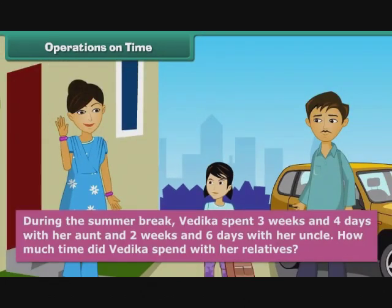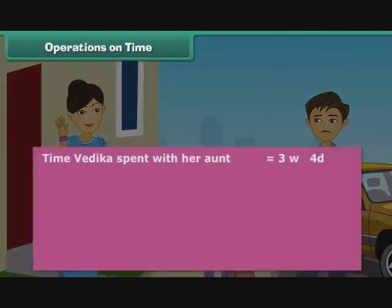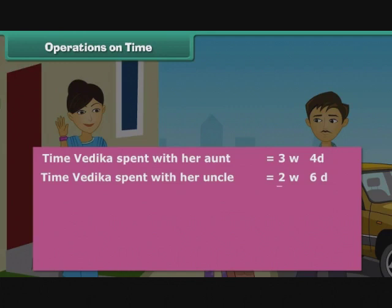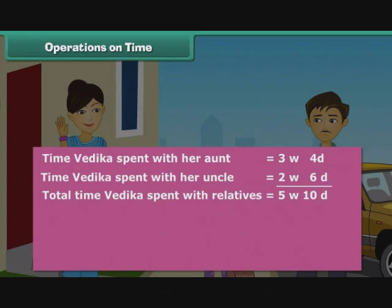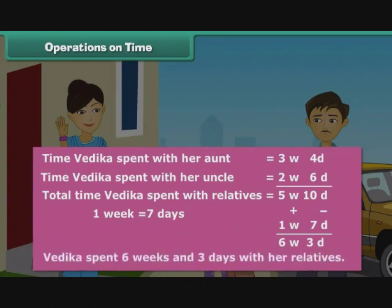During the summer break, Lethika spent 3 weeks 4 days with her aunt and 2 weeks 6 days with her uncle. Total = 5 weeks 10 days. Since 1 week = 7 days, we subtract 7 from 10 days and add 1 to 5 weeks. Therefore, Lethika spent 6 weeks and 3 days with her relatives.